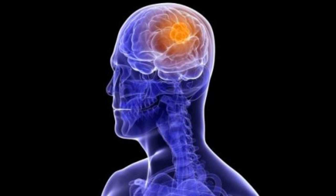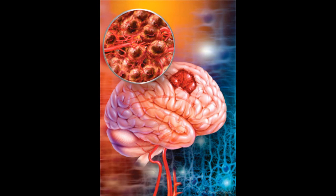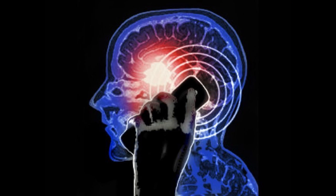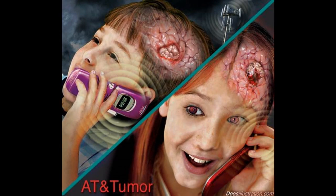Primary brain tumor causes are unknown, but researchers believe that brain tumors could be influenced by genetic cell mutations, viruses, injuries, chemicals, hormones, environmental factors, and exposure to radiation. There is a widespread belief that cell phones can cause brain tumors by radiating electromagnetic waves which damage brain cells. However, there is an insufficient amount of evidence to support this belief.